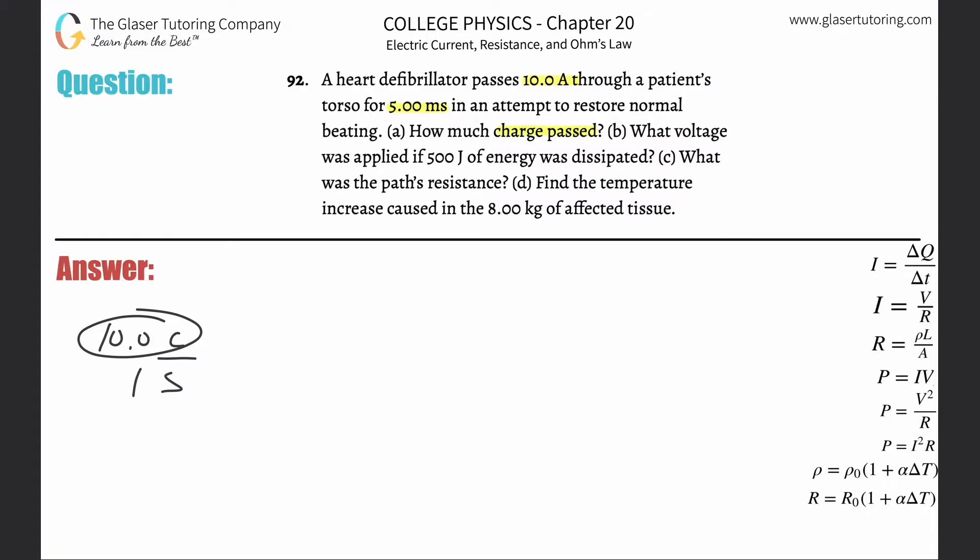Well, how many seconds is this current applied? 5 milliseconds. So we can simply figure this out. If I can simply convert this from coulombs per second into coulombs per millisecond, knowing that there's for every single second, there's 1,000 milliseconds.